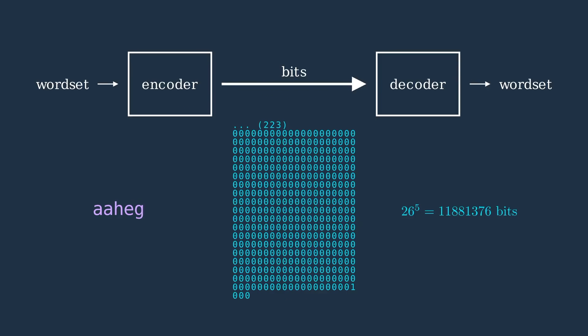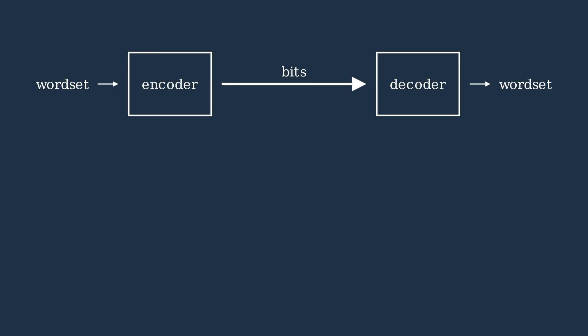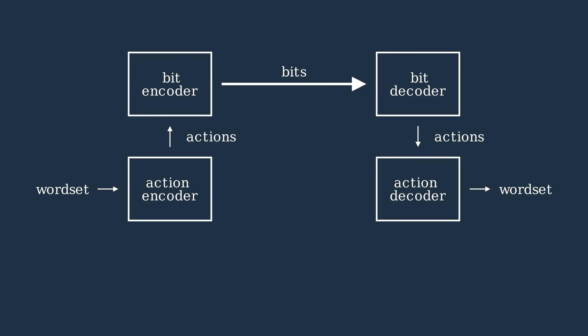That is kind of a large number, but don't worry, we'll be improving it. For the Wordle wordset, the vast majority of these bits end up being zero because there are only 12,947 words. So let's modify our encoding to take advantage of that information. We split the encoder into an action encoder and a bit encoder, and we similarly split the decoder.